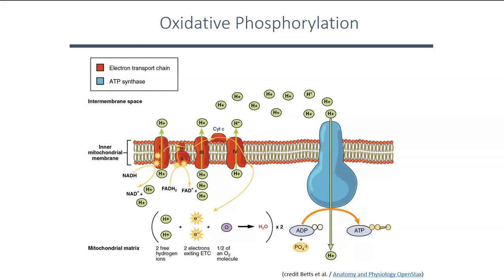Oxidative phosphorylation can be broken into two stages: the electron transport chain and chemiosmosis. The electron transport chain is where those high energy electrons generated through redox reactions are delivered. NADH, in its reduced state carrying high energy electrons, shows up and is oxidized — it loses electrons. As electrons are passed along, energy is released and hydrogen ions are pumped across the inner membrane of the mitochondria, where they begin to concentrate.